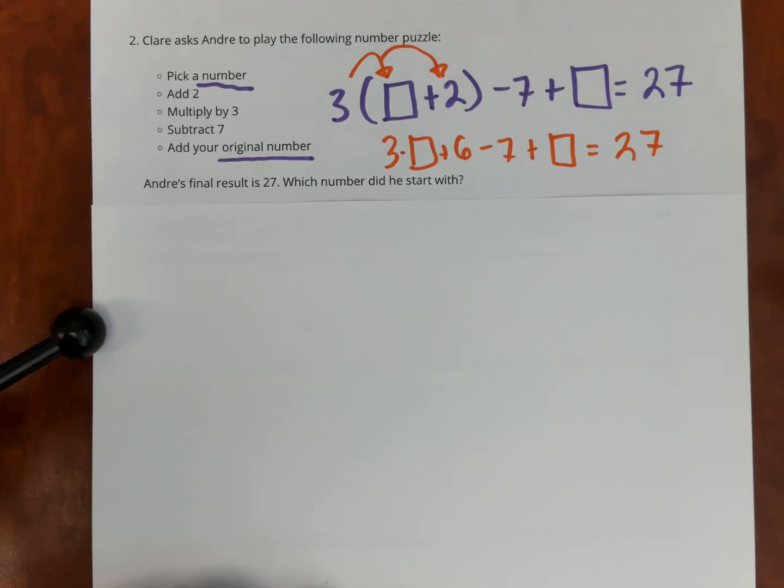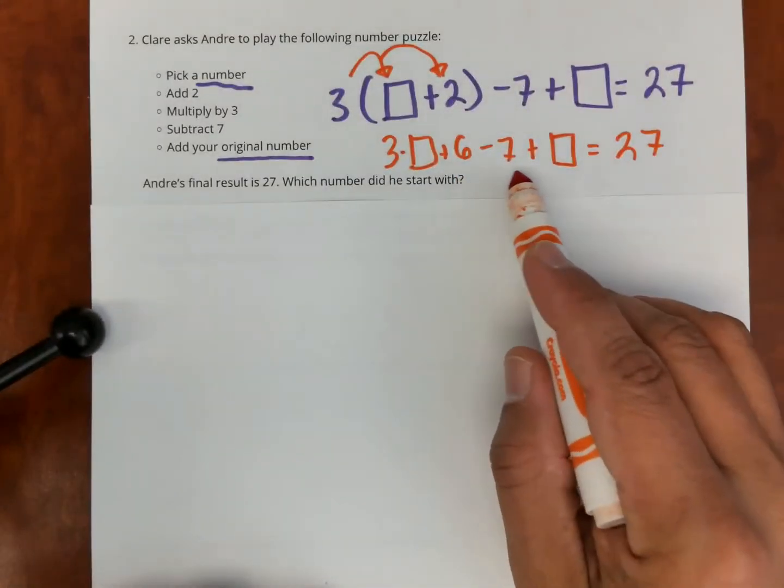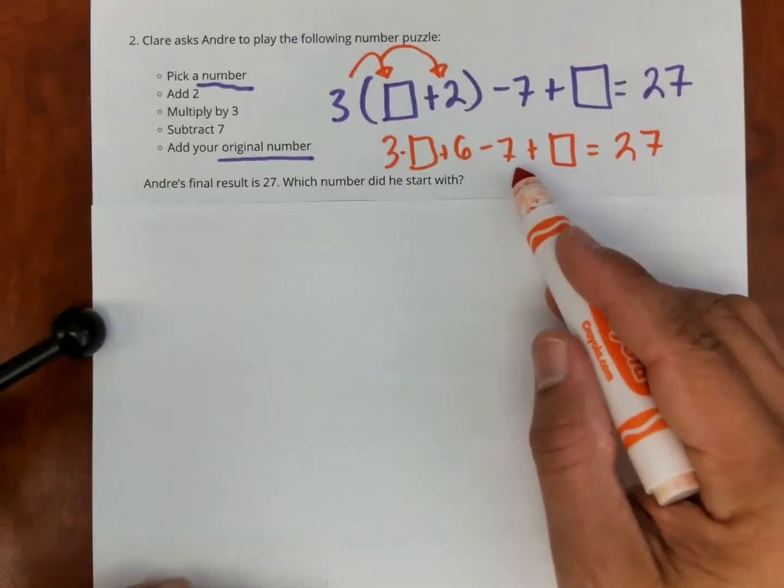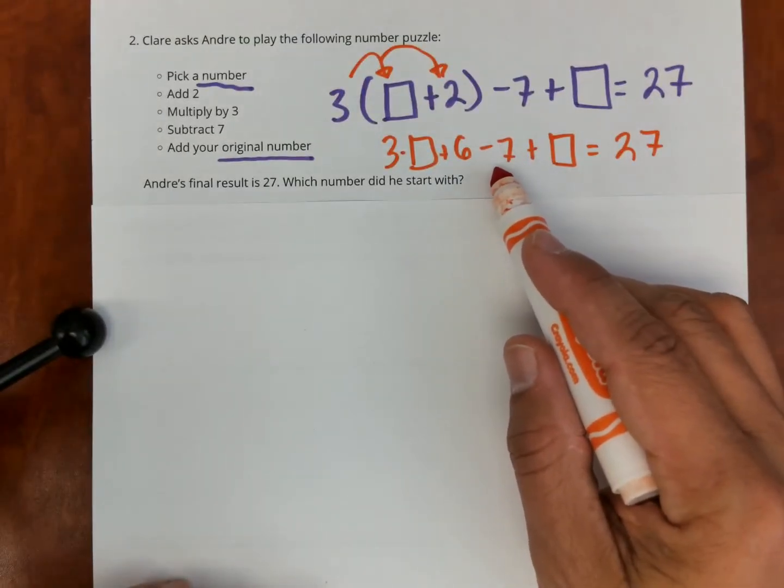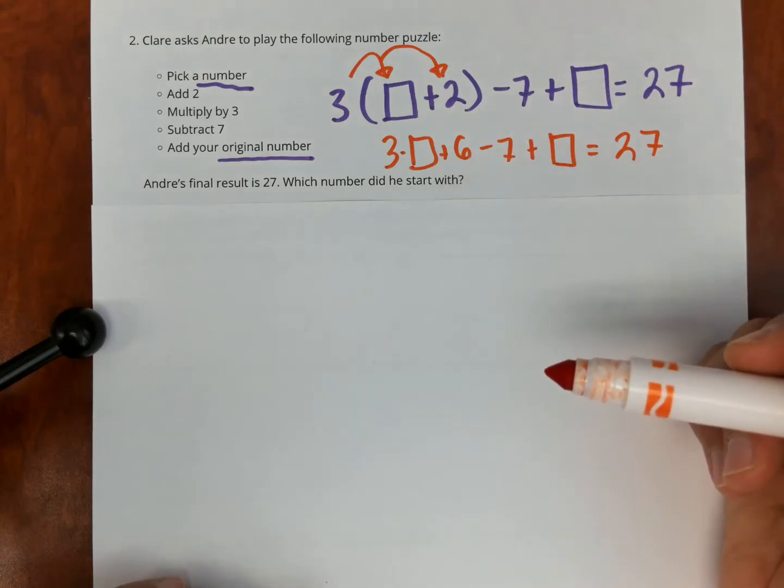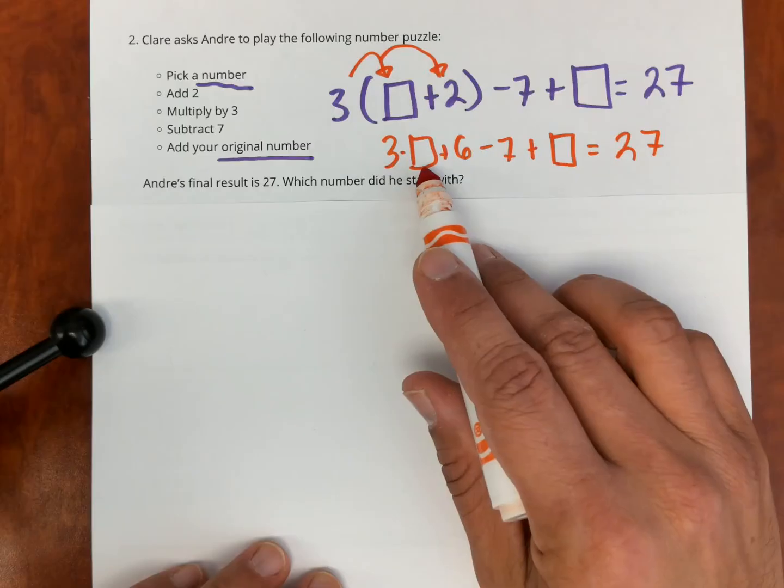Okay, so now here I have something much simpler to work with. If I add six and then minus seven, what am I really adding to it? I'm just adding minus one, right? If I add six and then take away seven, doing that whole thing in one step, it will just be doing a minus one.